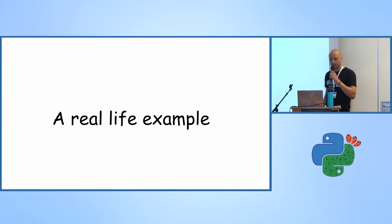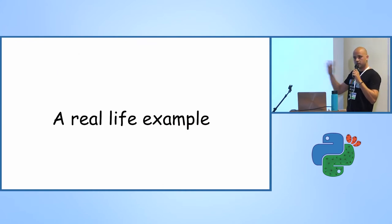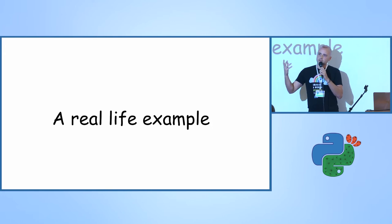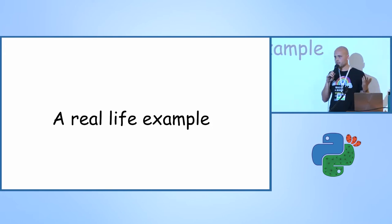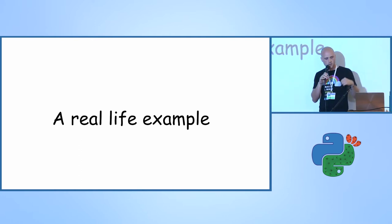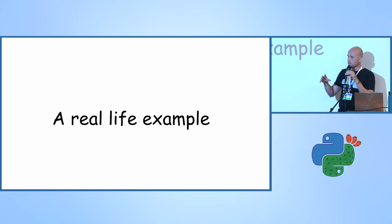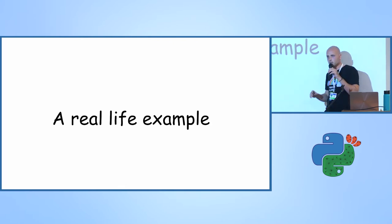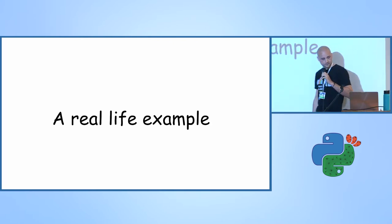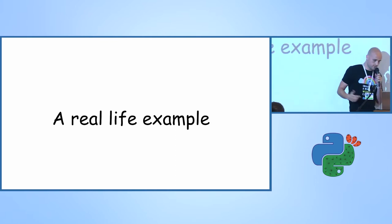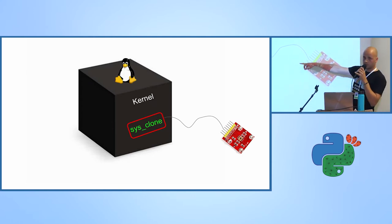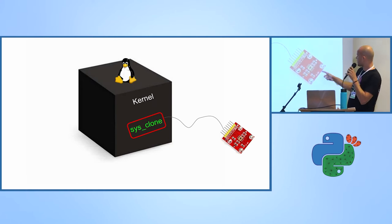Let's see a real-life example. Imagine we have a server with a sudden spike in the number of processes being spawned. As a developer I want to investigate it — I want to tell exactly what's going on. With eBPF and Python this is really easy: in Linux, every process that is spawned goes through the clone system call, so all we need to do is connect a tiny sensor to that hook.